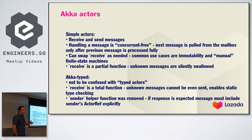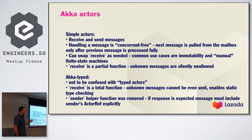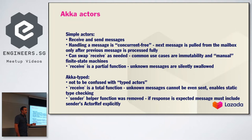That's one of the reasons for Akka Typed — a different infrastructure that tries to address two things: the receive being a partial function, and improving type safety. In Akka Typed, you define what type of messages an actor can handle, and your receive function becomes a total function that takes that interface or trait as input. The big difference is that in simple actors there's a sender helper method, but in Akka Typed they removed that and made it explicit in the message itself so type safety can be observed.